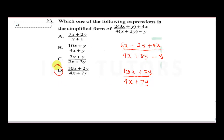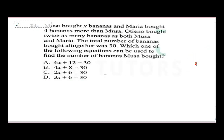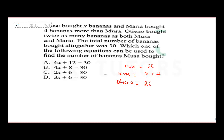Question 24: Musa bought x bananas. Maria bought four bananas more than Musa, so Maria bought x plus 4. Otieno bought twice as many bananas as both Musa and Maria combined, so Otieno bought 2 times x plus 2 times (x plus 4).